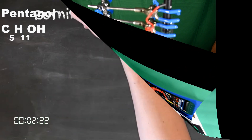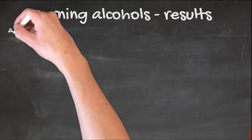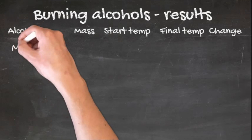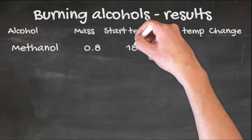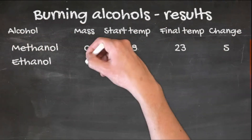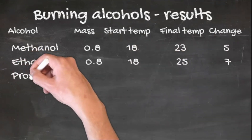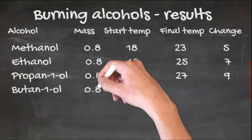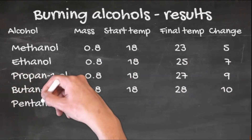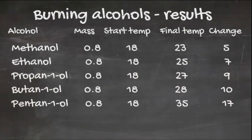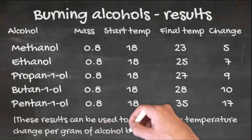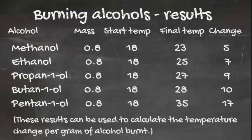These are our results for the burning of alcohols: methanol, ethanol, propan-1-ol, butan-1-ol, and pentan-1-ol. As said before, these results can be used to obtain the temperature change per gram of alcohol burnt.